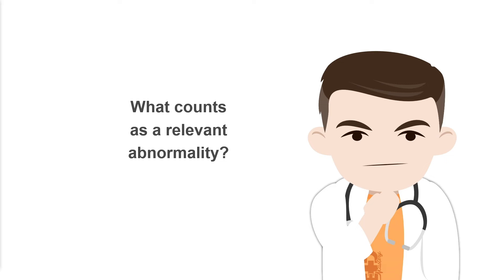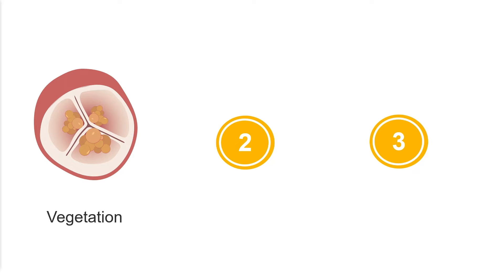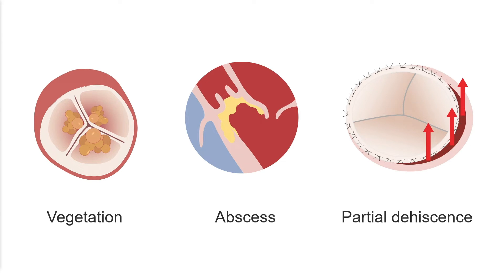There are three key echocardiography abnormalities to look for during an endocarditis study. Firstly, the presence of one or more vegetations. Secondly, the presence of a valve abscess. Thirdly, partial dehiscence of a prosthetic valve.